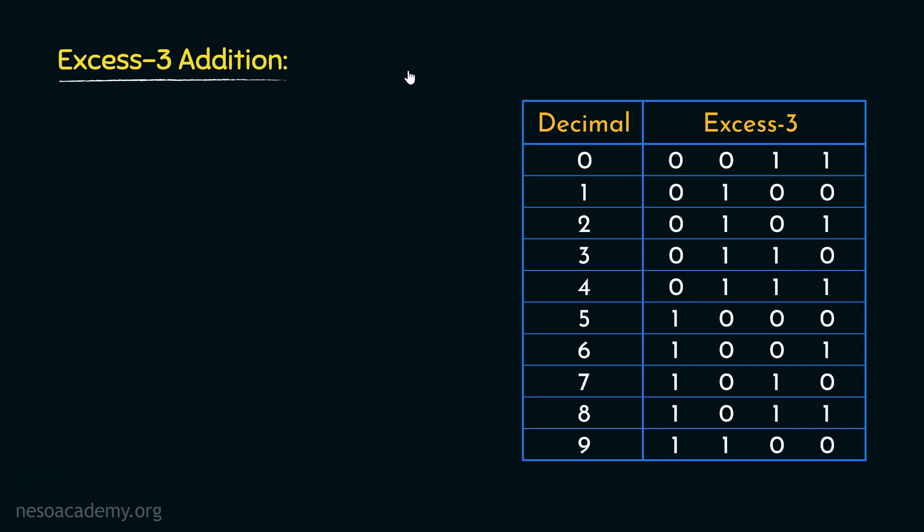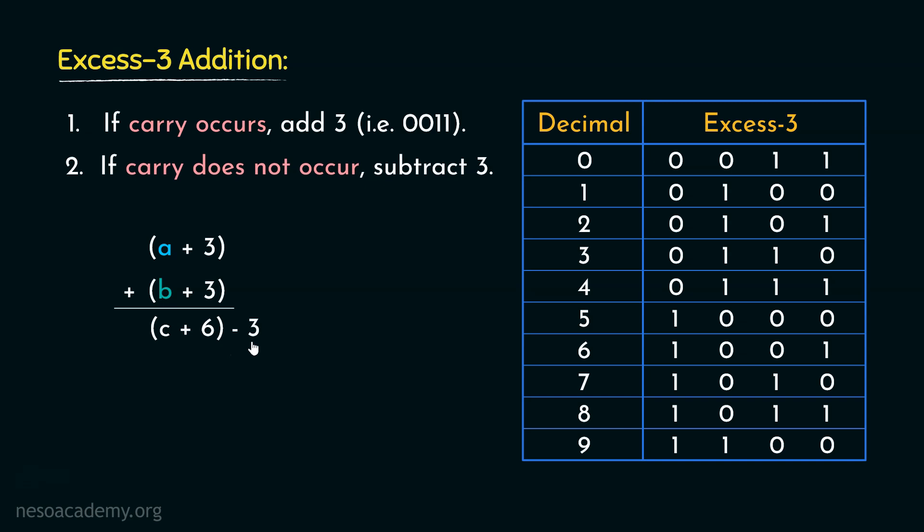Now in case of XS3 addition, there are only two rules to follow. First, if carry occurs, we need to add 3, that is, this binary value 0011. Coming to the second rule, if carry doesn't occur, we need to subtract 3. Now let me explain why it happens. Say, we have a number A which is BCD and since we have added 3 to it, it has become an XS3 value. Similarly, B is also a BCD number which adding 3 has become another XS3 value. Now, say we are performing addition between these two and we obtained C plus 6. So, basically adding A and B, we obtained C and these two 3's resulted in 6. So, this result is now an XS6 value. Now, in order to convert it to an XS3, we actually need to subtract 3, right? And finally, we will obtain the C plus 3 which is the XS3 version of C.